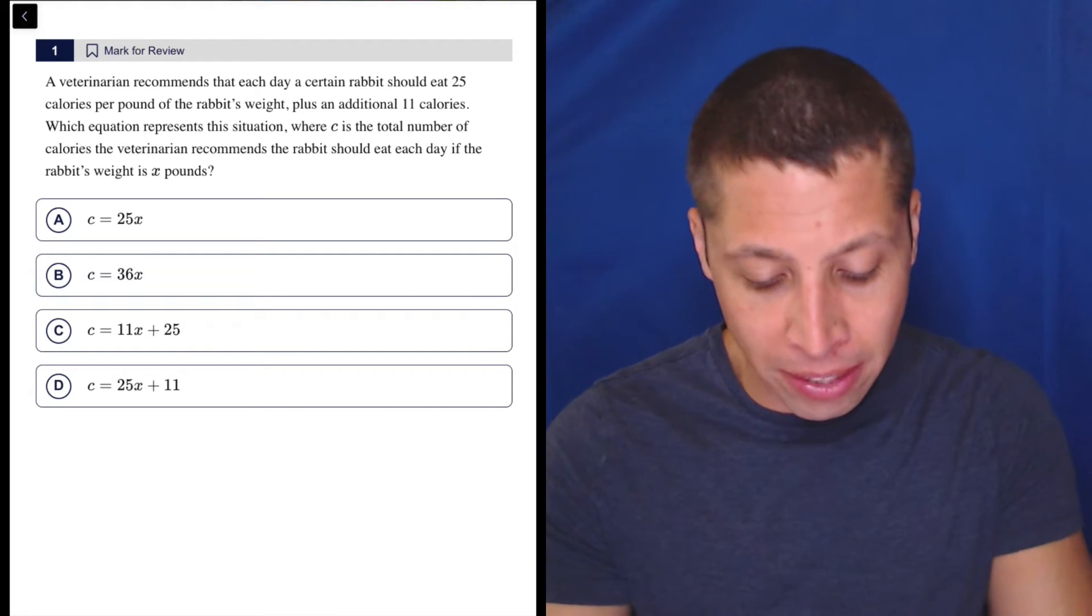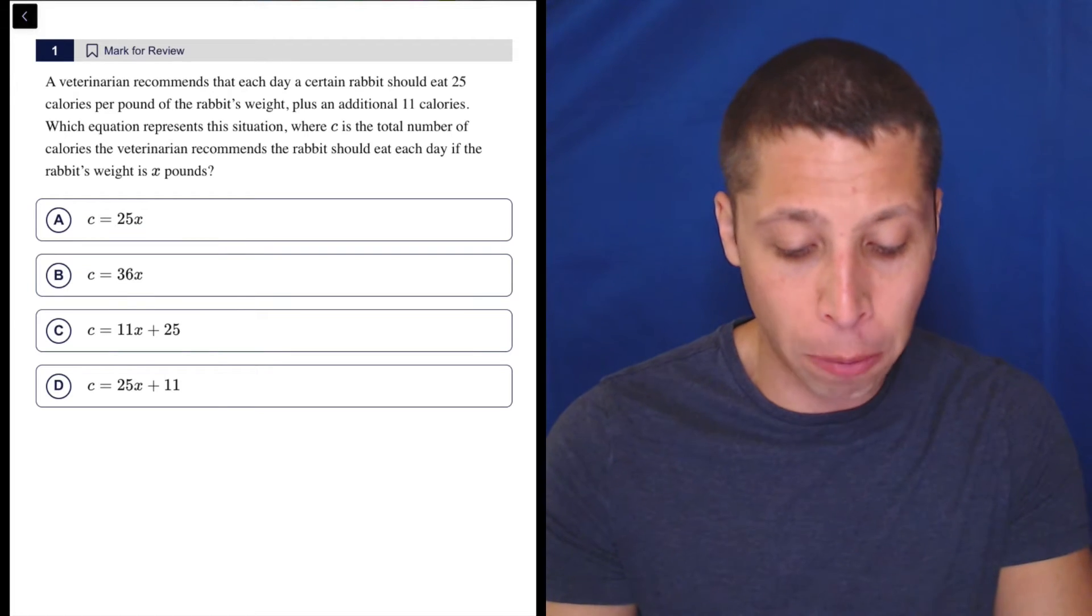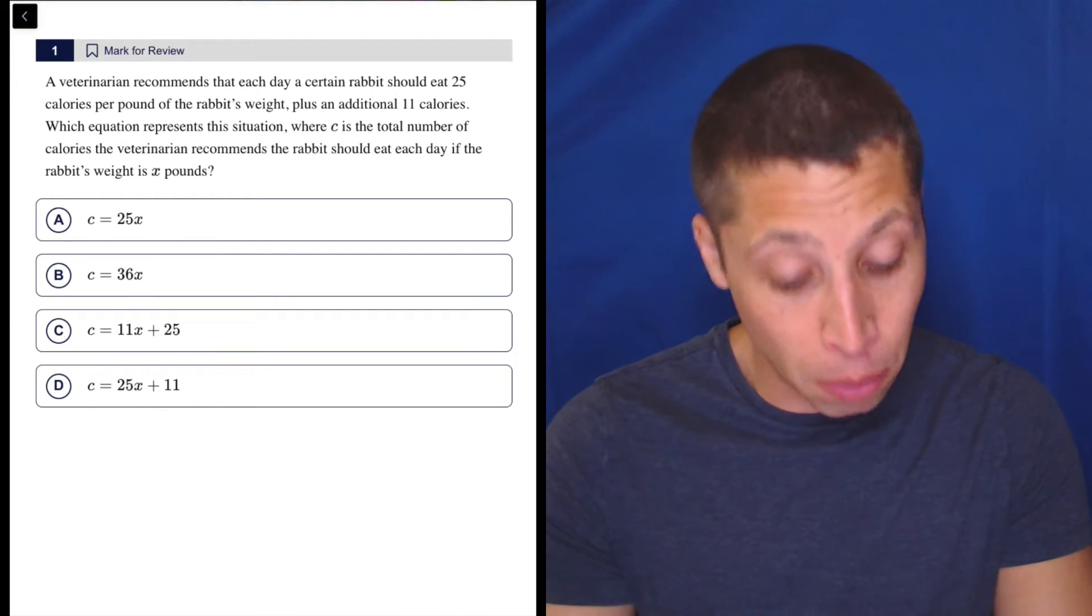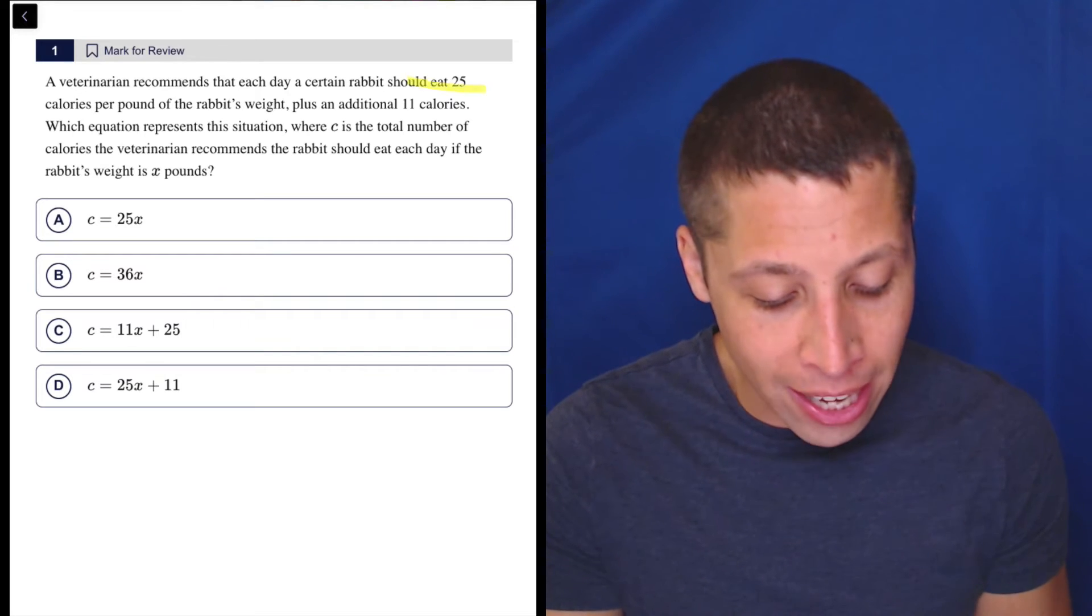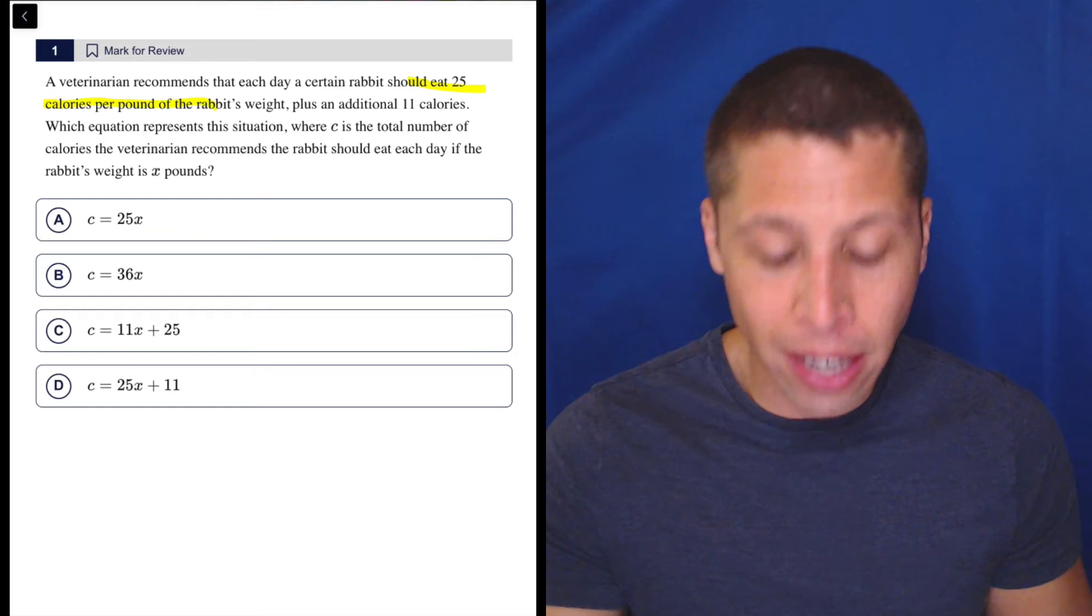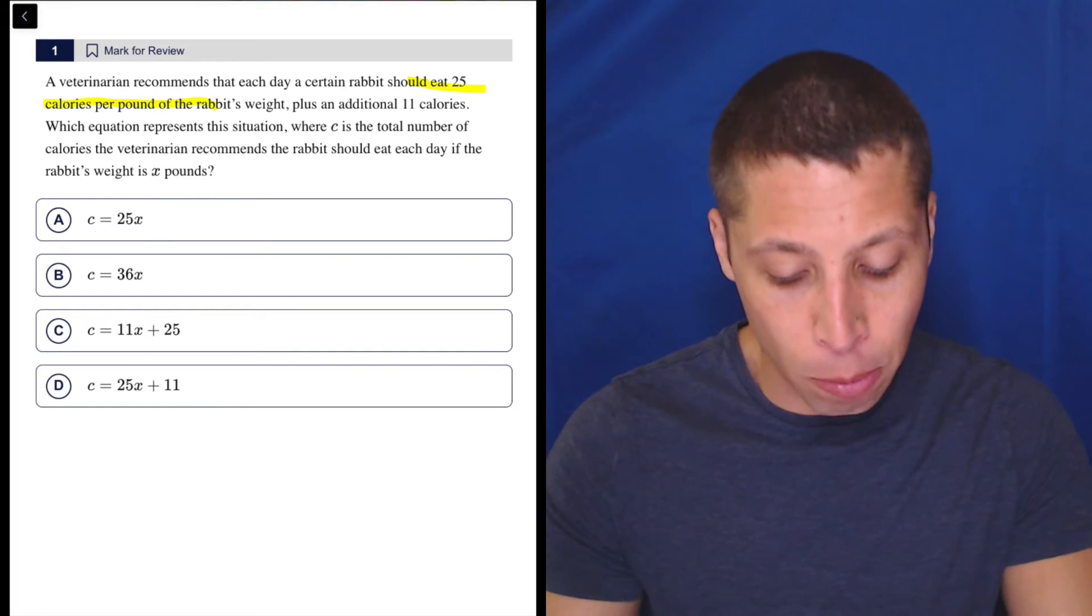A veterinarian recommends that each day a certain rabbit should eat 25 calories per pound of the rabbit's weight. Well, right away, if you've been practicing, that should sound like a slope. It's got a rate here, and rates and slopes go together.